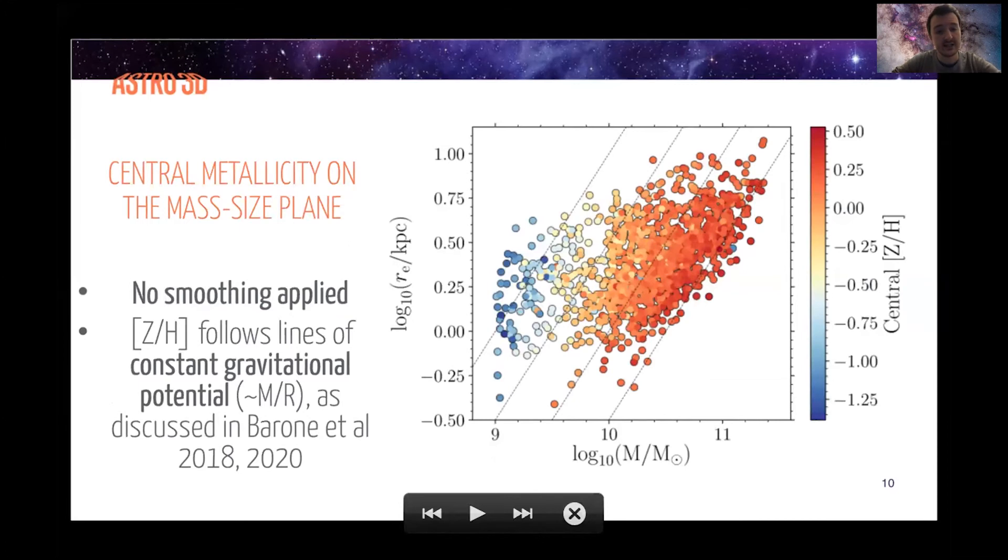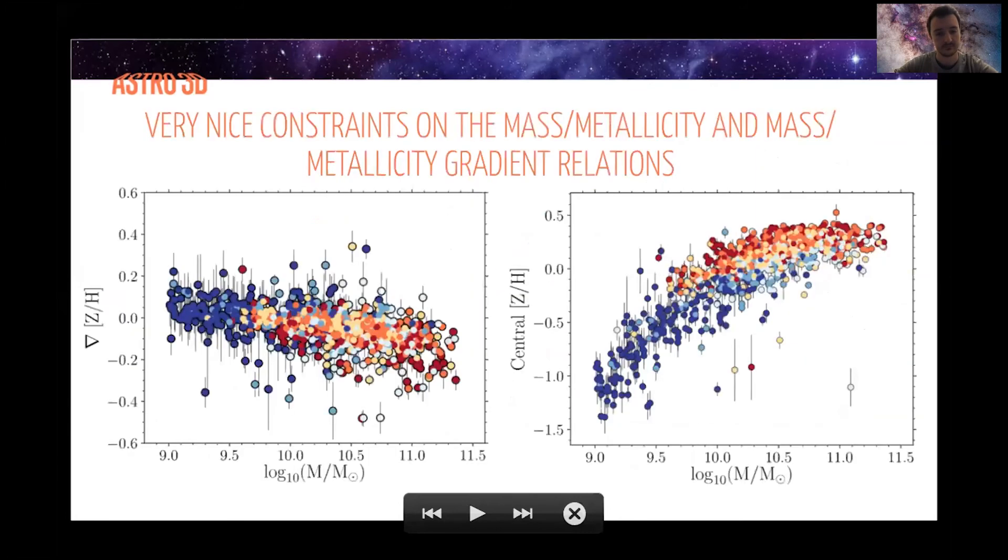So here's the central metallicity on the mass size plane. On the x-axis I'm plotting the stellar mass and the y-axis I'm plotting re. So size of the galaxy essentially. And all the points are colored by the central metallicity I measure. The metallicity at r equals zero. I should say here that I'm not applied any smoothing. This is the data I get from the fits and you can see these dotted straight lines. These are lines of constant gravitational potential or M on R. And this is discussed in some recent work by Tania Barone. These lines are generally lines of constant metallicity. So you can see that I'm doing a pretty good job of recovering this result, especially at the high mass end.